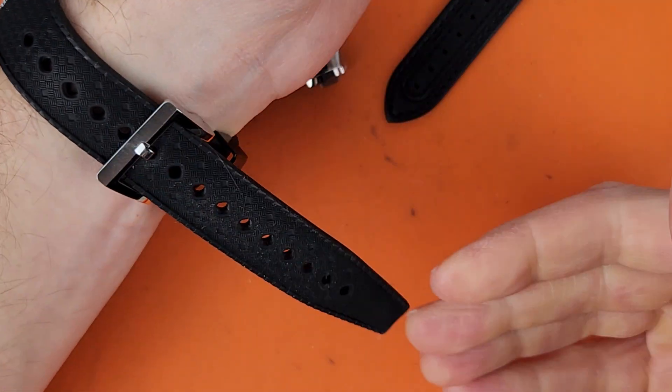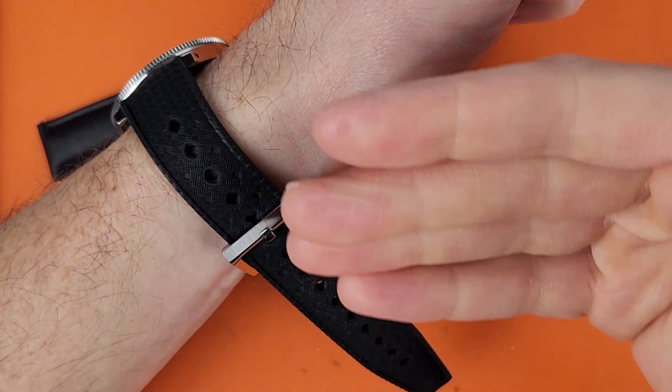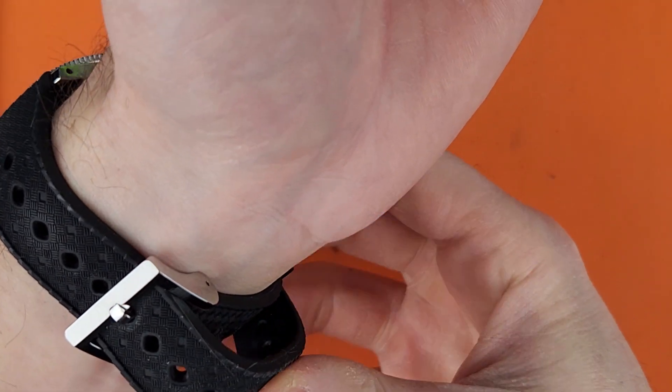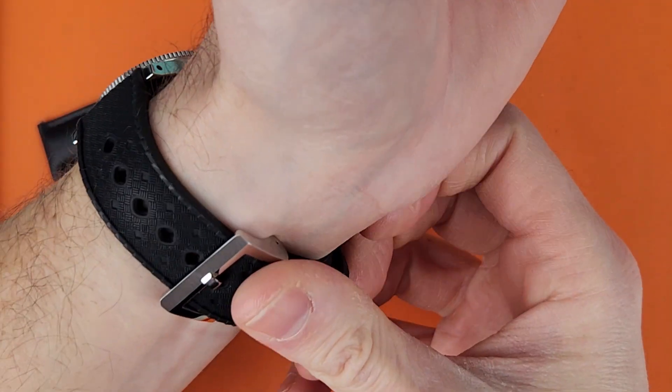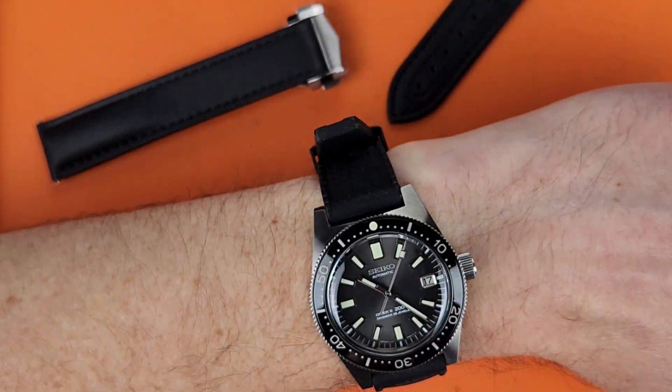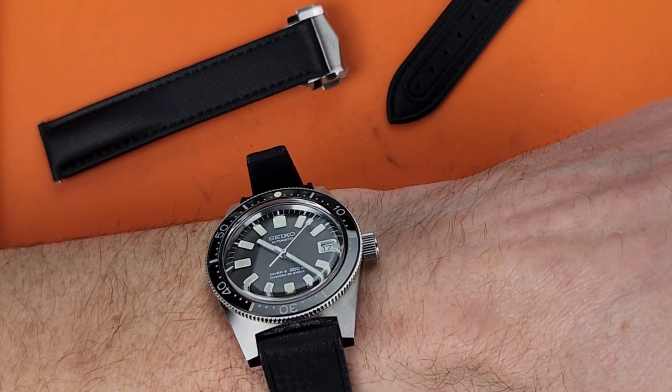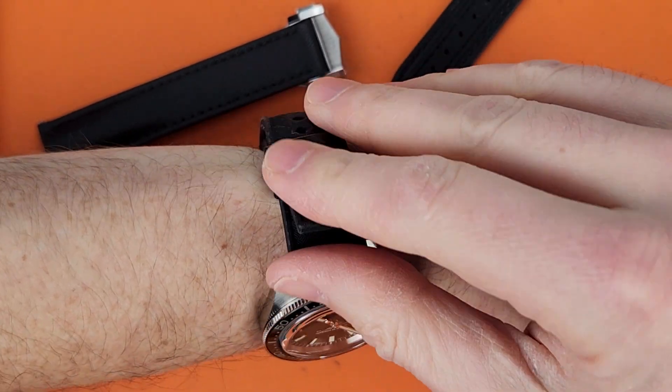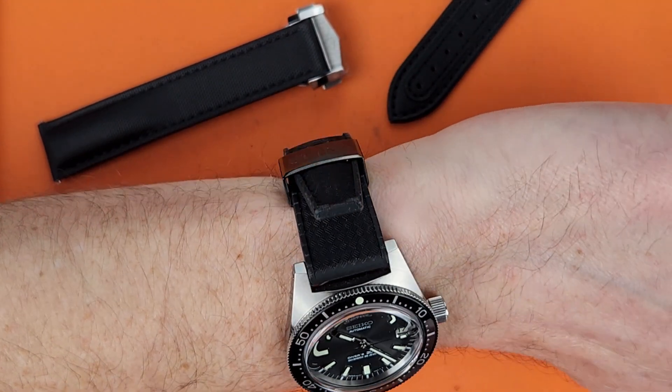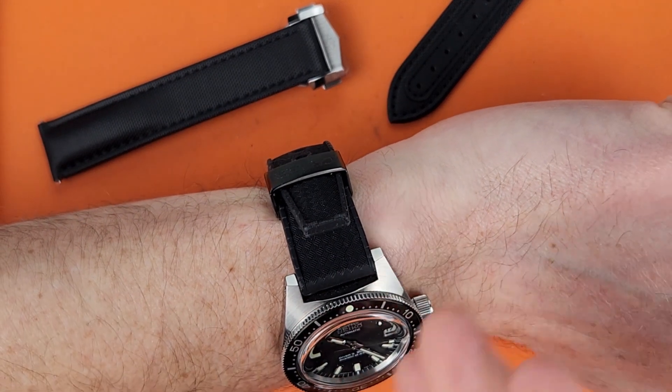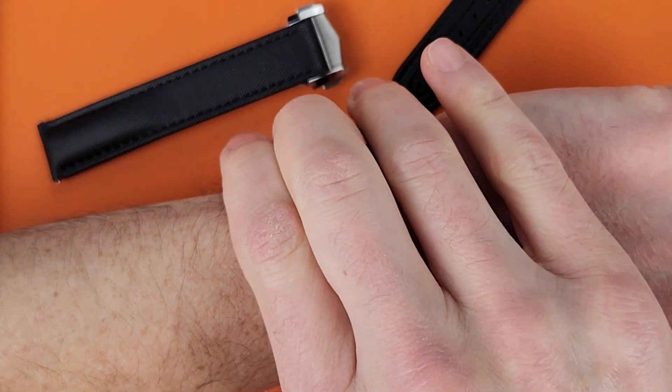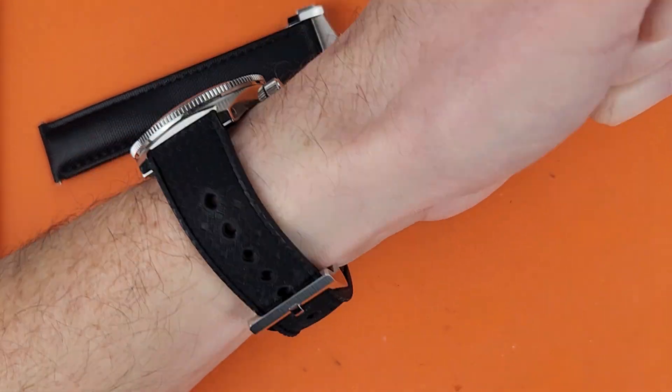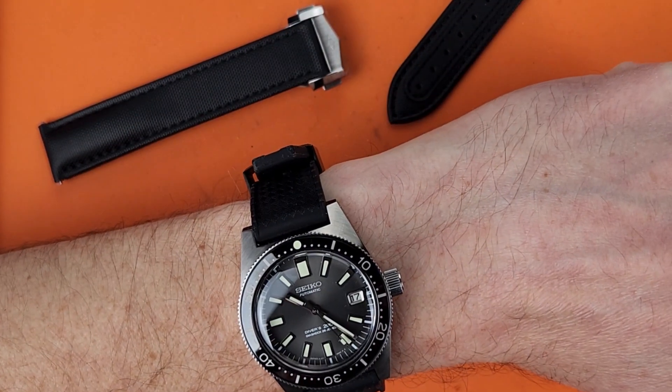I'm sure the strap is this long as it's a dive watch, it's a recreation of the 62MOS. The Tropic style strap but it's silicone. Tropic straps are rubber so they'd be a lot more comfortable than this. Also I don't care for that metal keeper. You can see that thing just sticking out there. When wearing long sleeves the sleeves really do get caught up on this thing.